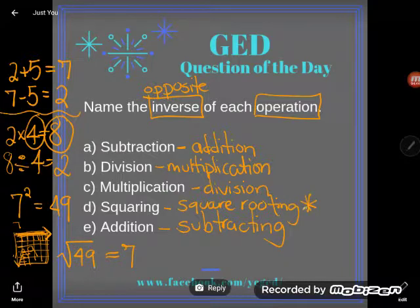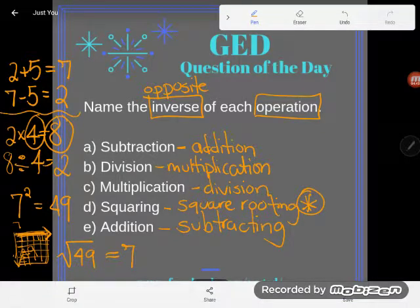And guys this is the one students forget most often. And by the way the GED knows that. There's a ton of algebra problems where this comes up. It comes up in the Pythagorean theorem. It comes up in those geometry problems where they ask you to work backwards and find the radius when you've been given the volume of a cylinder. It happens all over the GED. So super important you understand that the opposite of squaring is square rooting.